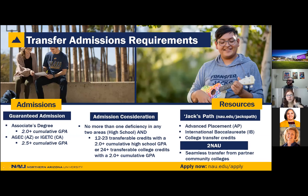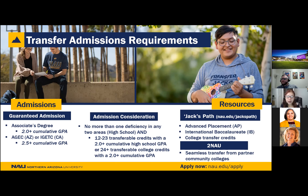I'll go over the transfer admissions requirements to become a transfer student at NAU. You will be automatically admitted if you have an associate's degree with a 2.0 GPA, or the AGEC — Arizona General Education Curriculum certificate — with a 2.5 GPA. However, some students just take a semester or two of courses and then decide to transfer. In that case, we'll look at a combination of your college and high school transcript to determine your eligibility for admissions.